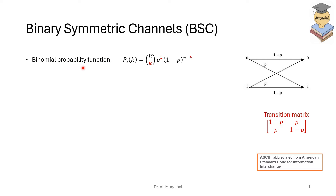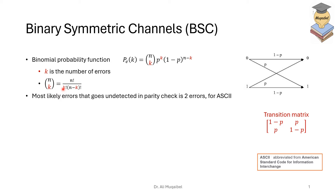We need to use the binomial probability function when asked for the probability of getting k errors. k is the number of errors and depends on the block size n — how many bits are transmitted at once. The formula is n-choose-k times p^k times (1-p)^(n-k), where n-choose-k equals n! divided by k! divided by (n-k)!. Higher-order errors have smaller probability since p is usually a small number.